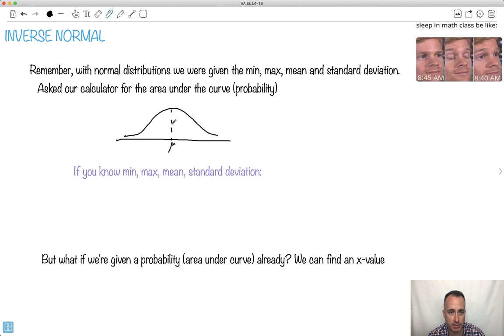This right here is the mean, this right here then might be the standard deviations. This is mean plus sigma, this is mean minus sigma, something like this. In this case, if we know the minimum and the maximum and the mean and the standard deviation, remember the area under the curve was the key here.